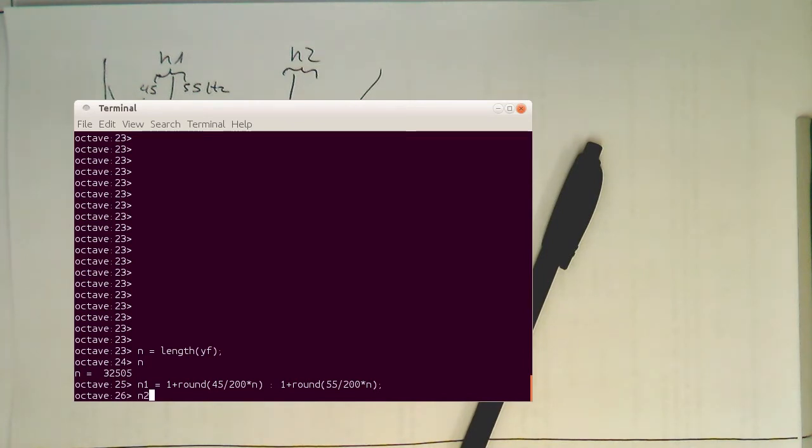And then we do the mirror. Remember, so the mirror is one plus, and then length of YF. Well actually no, we have defined this as N. So we don't need to do this. And then minus round of 55 divided by 200 Hertz multiplied by N. And then we just run that up to one plus length from YF. So reverse order. And then we're subtracting the round from 45 divided by 200 Hertz sampling rate by the length. So let's hope I have not done any problems with bracketing here.